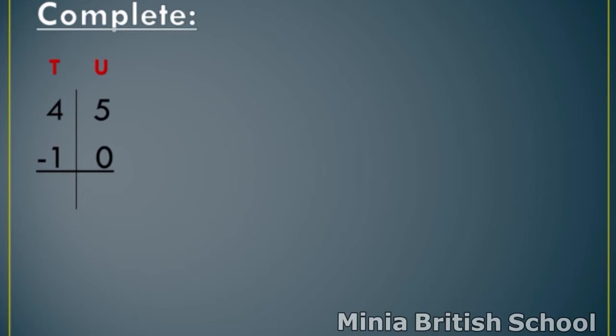And in tens, you have number one and number four. Where is the smallest number? One. So, close your fingers and count. After one: two, three, four. How many fingers? Three. So, write three under tens. The answer is thirty-five.